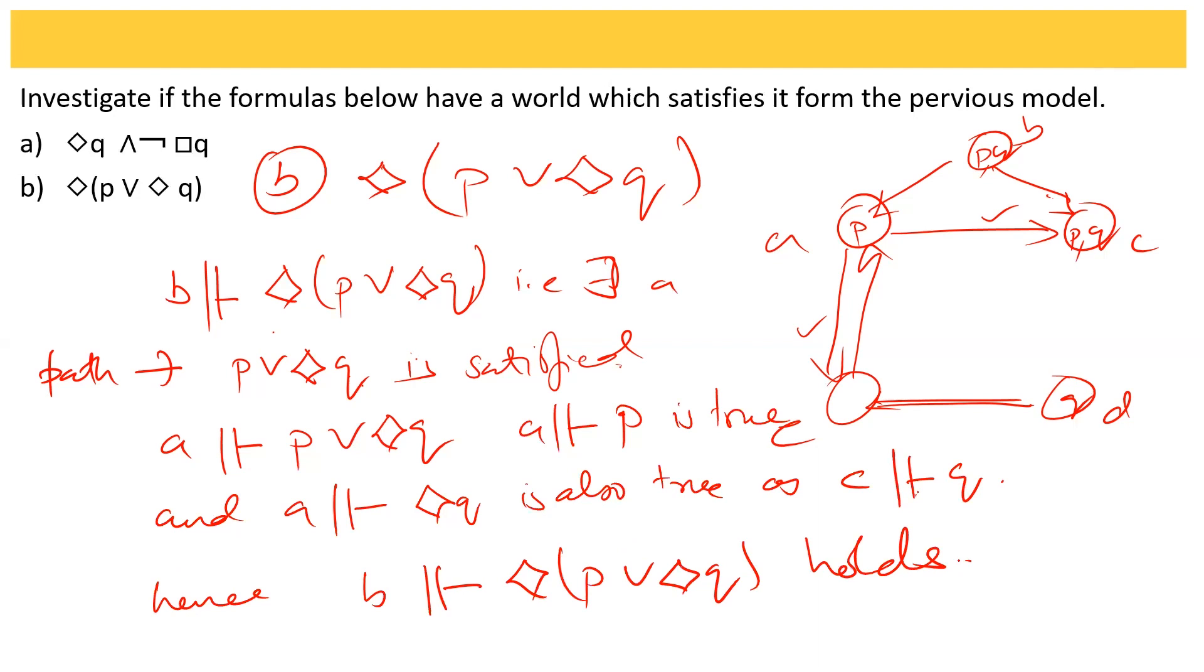We found the path here which satisfies the given formula for the world. This is the way we check the satisfiability of a formula given a world in the Kripke model.